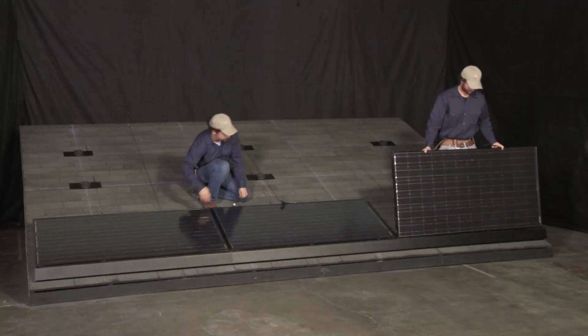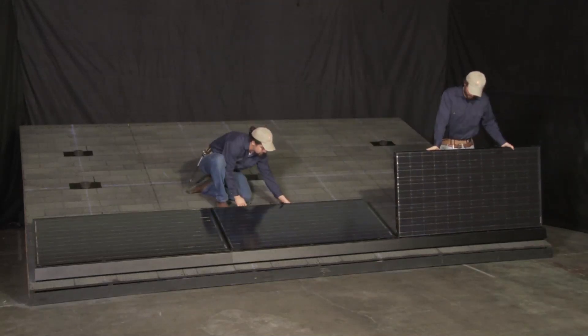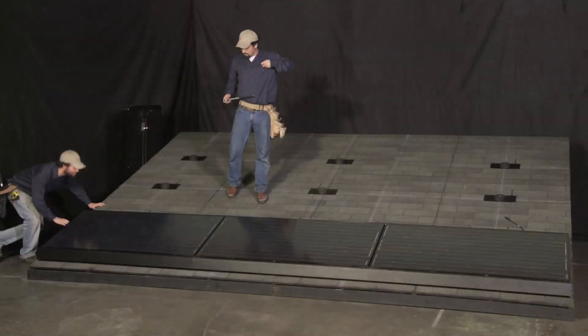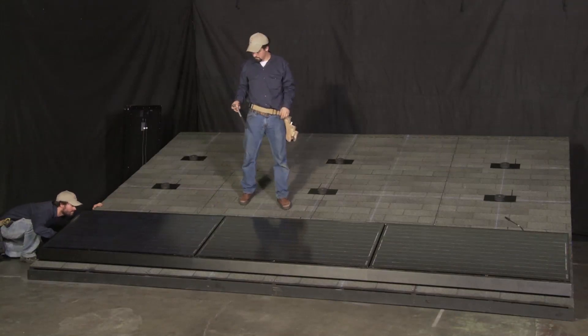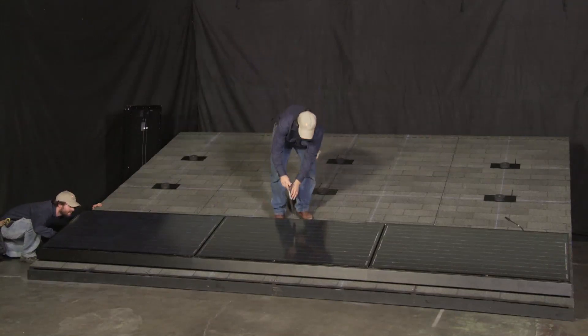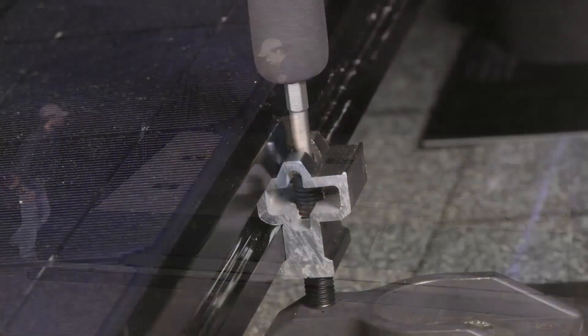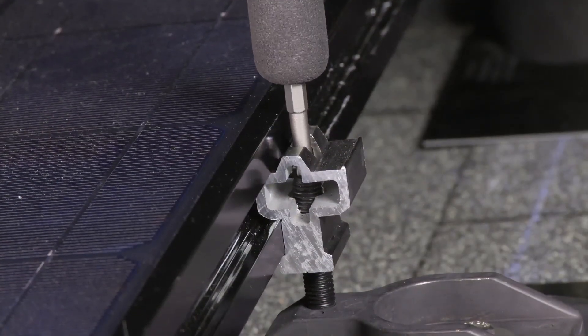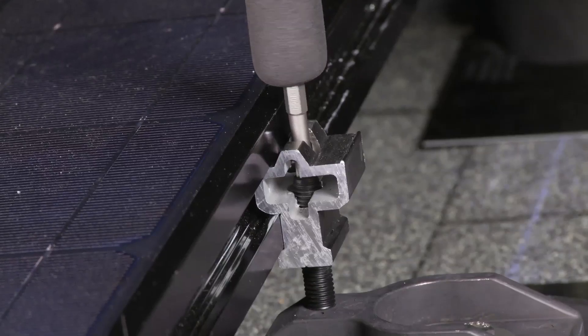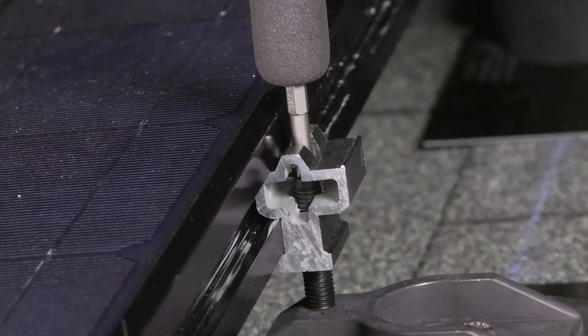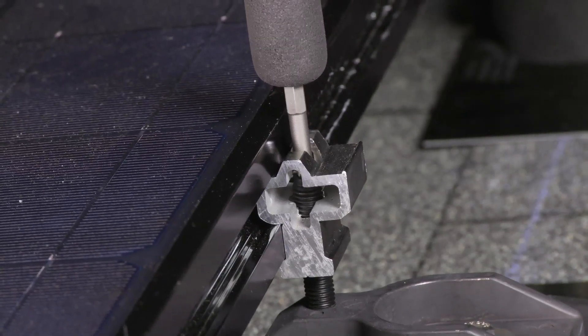Following the same procedure, all remaining front row modules are dropped into position. Now that the front row is completely installed, the array is checked for level. To compensate for inevitable imperfections in the roof's surface, the leveling feet can be adjusted to bring the array into plane. By turning the threaded stud of the leveling foot with the ZEP tool, the array is raised or lowered, allowing the array surface to be perfectly dialed.